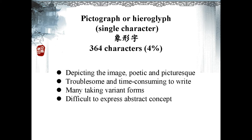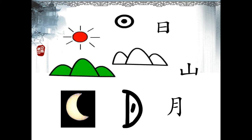Many characters take variant forms, which must have caused confusion. It would also be difficult to express abstract concepts. This pictograph is the sun — a circle with a dot in the middle, just like the glaring sun. Three peaks symbolize the numerous peaks of the mountain ridge, so this pictograph is mountain. The crescent is the moon. All three are also radicals.